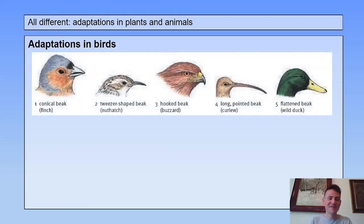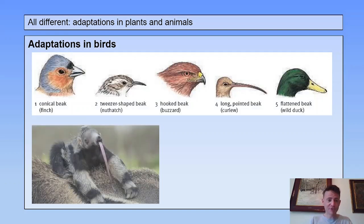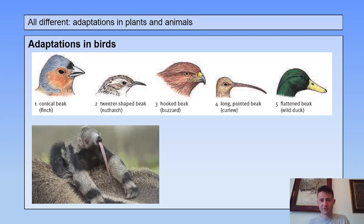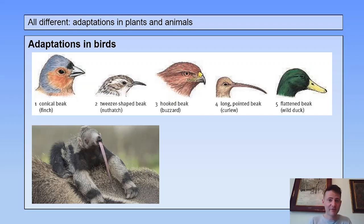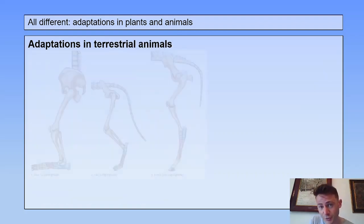Here you see different beaks of different birds. I'm not going to discuss them all. But the important thing is, just like with the anteater, you see that form fits function. So some beaks are adapted for eating seeds, and some beaks are adapted for ripping off parts of meat. Keep in mind: form fits function.